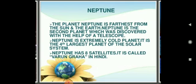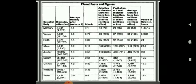Neptune is the 8th planet in terms of its distance from the sun, and it is the farthest planet from the sun and the earth. It was also discovered with the help of a telescope. Here you can see a table with information on the planets of the solar system — this is the planet fact sheet.